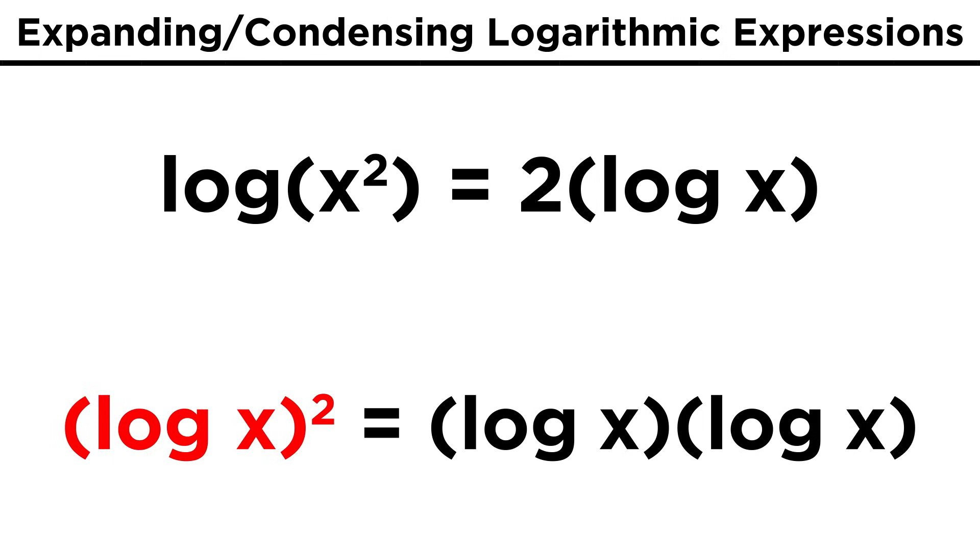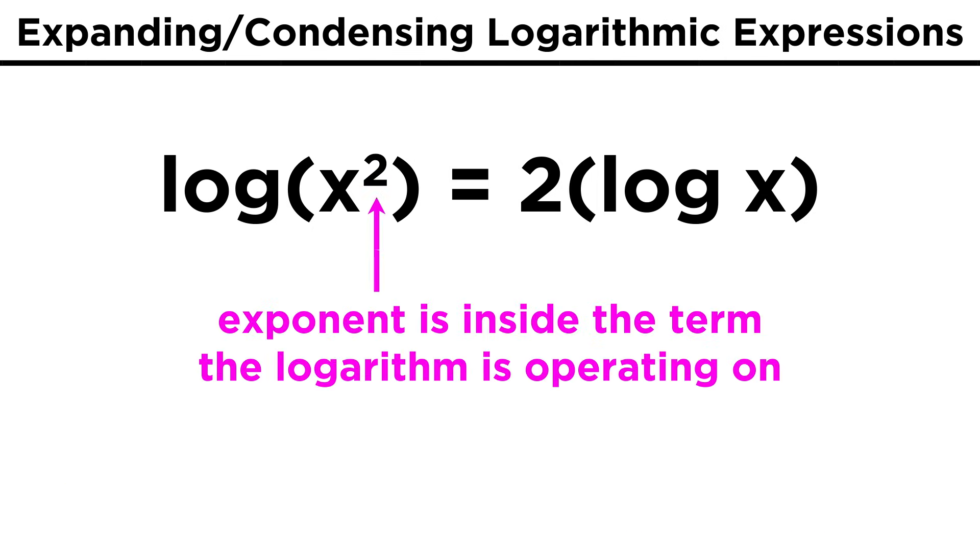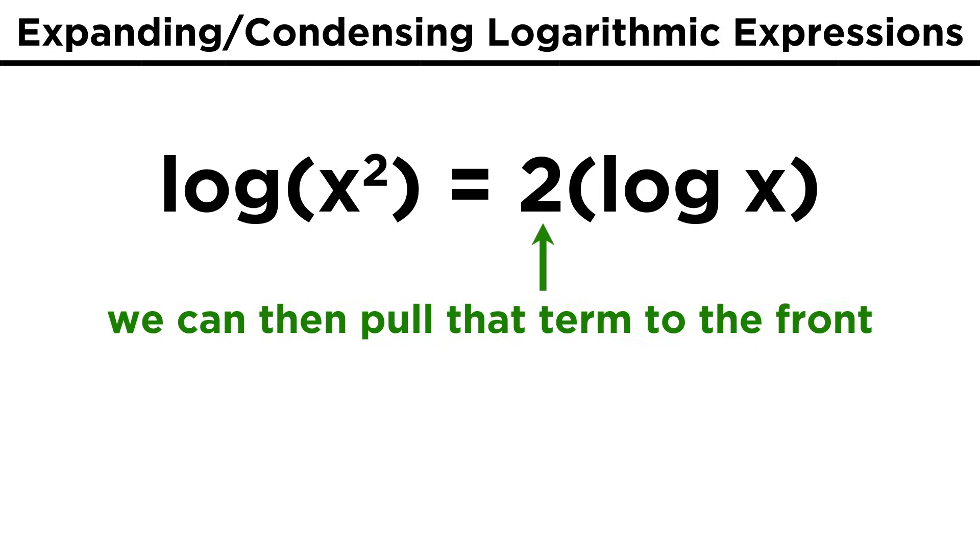If we had log of X quantity squared, that just means log of X times log of X, just as with anything else that we could square. This is not related to the property we are describing. When the exponent is in here, on this X term, it means that we are taking the log of X squared, and it is in this case that we can pull the two over to the front and get two log X.